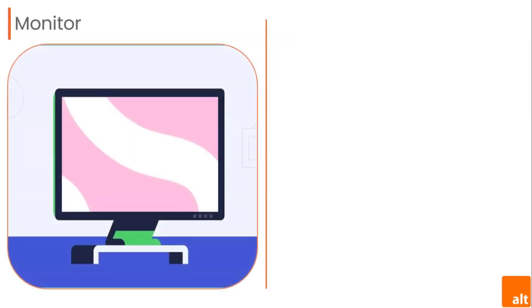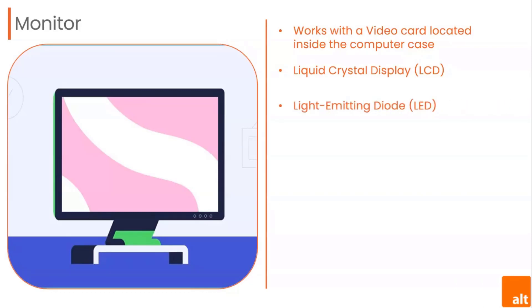The monitor works with a video card located inside the computer case to display images and text on the screen. Most monitors have control buttons that allow you to change your monitor display settings, and some monitors also have built-in speakers. Newer monitors usually have LCD (liquid crystal display) or LED (light-emitting diode) displays. These can be made very thin and are often called flat panels. Older monitors use CRT (cathode ray tube) displays. CRT monitors are much larger and heavier and they take up more desk space.